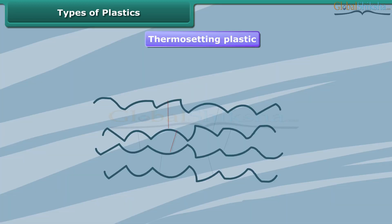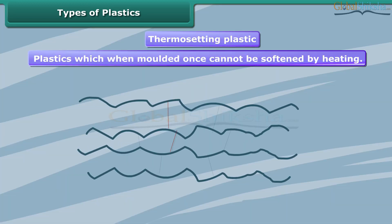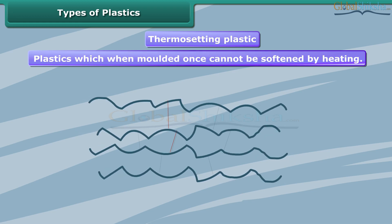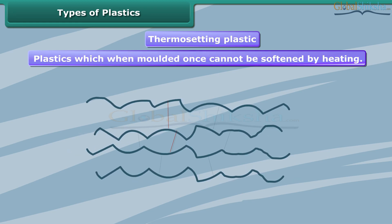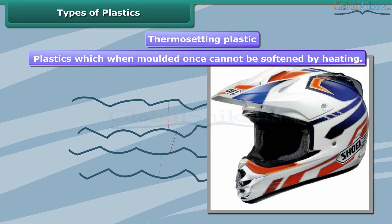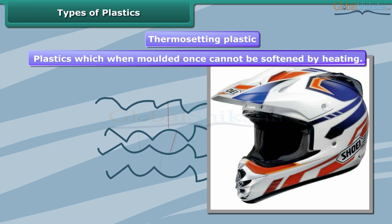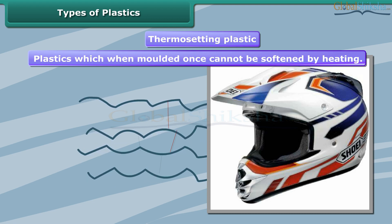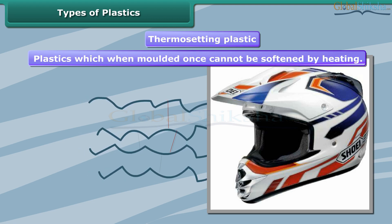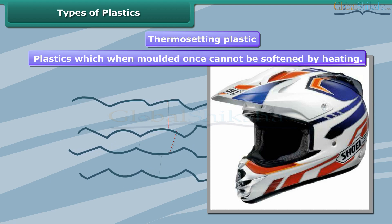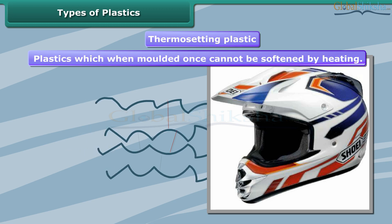Thermosetting plastics have a cross-linked arrangement of their constituent units. These can be melted and take shape once only. After they have solidified, they stay solid. On subsequent heating, they do not become soft and hence do not change their shape. Therefore, these cannot be recycled.